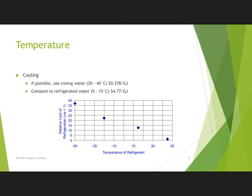Looking at this chart, we have the temperature of the refrigerant across the bottom, and as we go to lower and lower values, the relative cost of refrigeration goes up dramatically. The cost to go to negative 50 degrees C is going to be more than 35 times the cost of operating using cooling water.